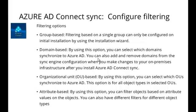Another filtering option is the organizational unit, and this is the one that we're going to be demonstrating. When we use this option, we are selecting the OU that we want to synchronize. Everything that you have in this OU in your on-premise environment, whether it be users or objects, those objects are going to be synchronized if you filter based on the OU.